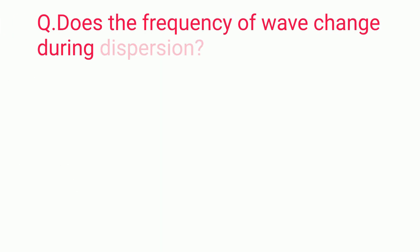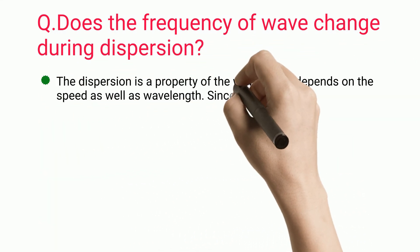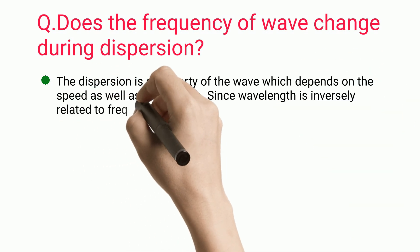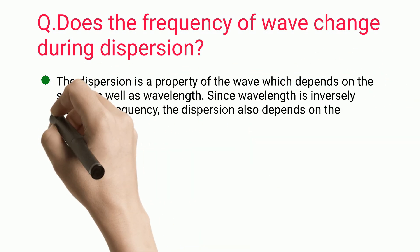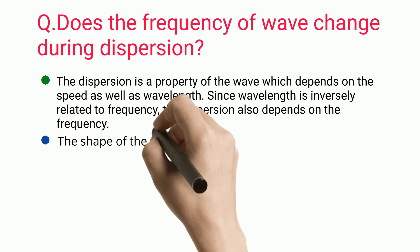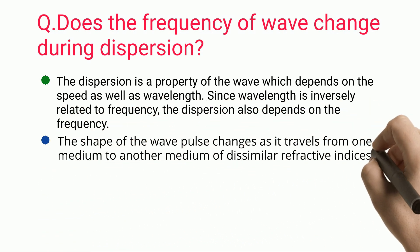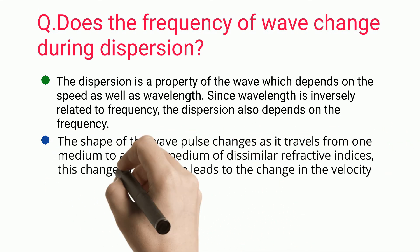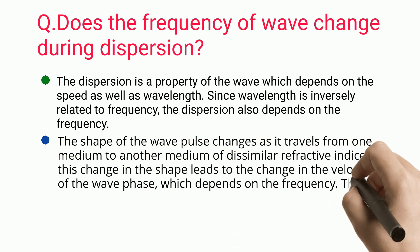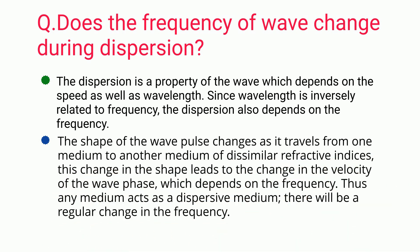Does the frequency of a wave change during dispersion? Dispersion is a property of the wave that depends on speed as well as wavelength. Since wavelength is inversely related to frequency, dispersion also depends on frequency. The shape of the wave pulse changes as it travels from one medium to another of dissimilar refractive indices; this change leads to a change in the velocity of the wave phase. Thus in any dispersive medium, there will be a regular change in frequency.